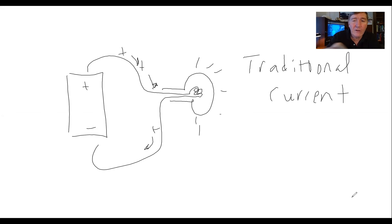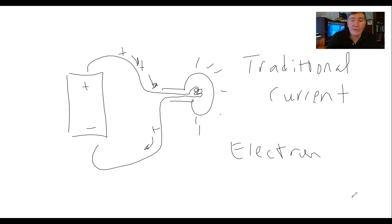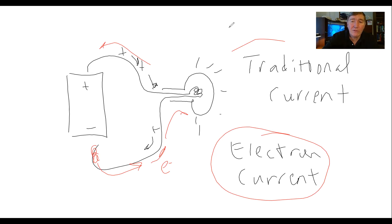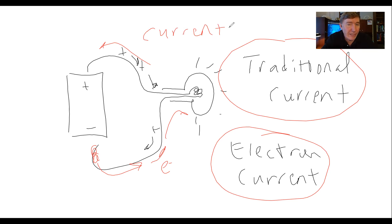So it's called the traditional current. If this is my battery — here's the plus side, here's the minus side, and here's a light bulb — we still treat it as if what's flowing is positive charges flowing from the plus side to the negative side, and we call that the traditional current. You will sometimes also see people talk about the electron current. If they talk about electron current, it's understood they mean the electrons, which is what's truly happening — going the opposite direction. Now, if somebody just talks about 'the current' without specifying, they're talking about the traditional current. Any textbook that uses just the word 'current' is talking about the traditional current, and that's what I'll be using most of the time in this class.